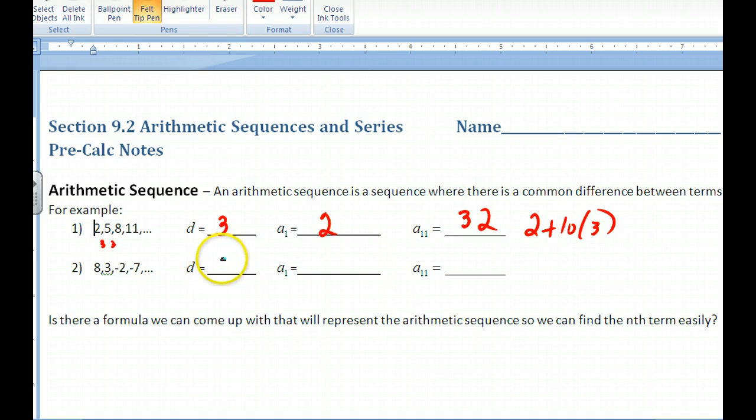If I look at this one, my difference is, well now I'm going down, so this would be negative 5, negative 5, negative 5. It has to be the same all the time. So my common difference is negative 5. First term is 8, and so if I do the same thing, my first term is this, and then I'm going to do one less difference to get to the 11th term. So I'm going to do 10 differences of negative 5, so I get negative 42.